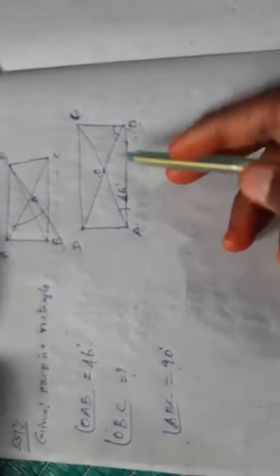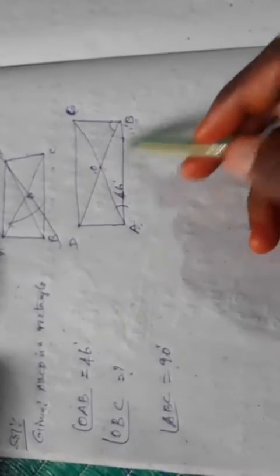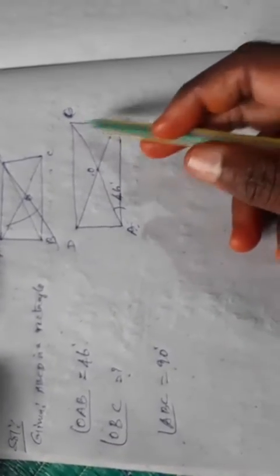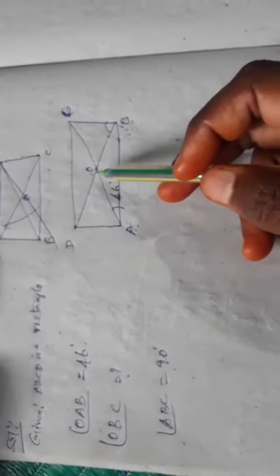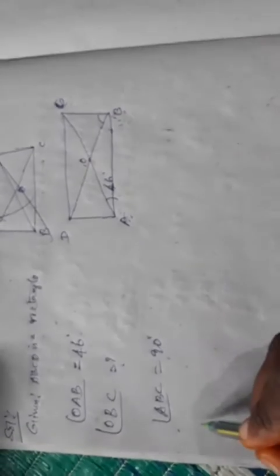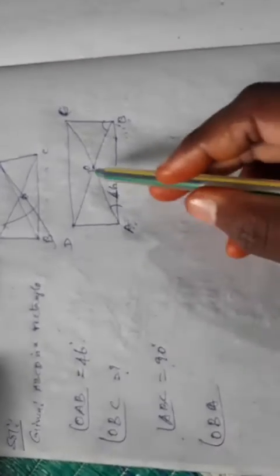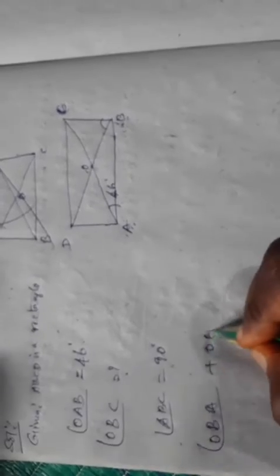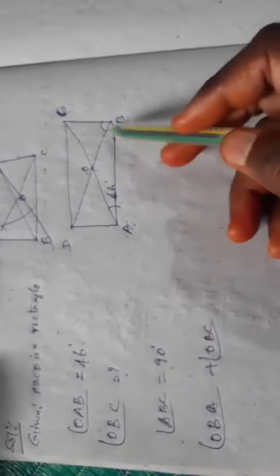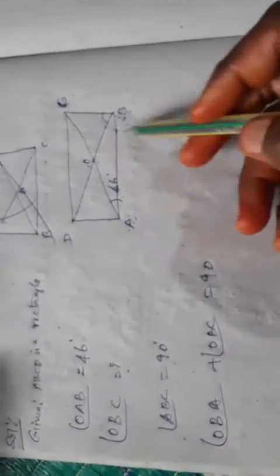Now we want to find angle OBC. Since OA equals OB, triangle OAB is isosceles. Therefore angle OBA equals angle OAB. The angles OBC and OBA together make up angle ABC, so angle OBC plus angle OBA equals 90 degrees.